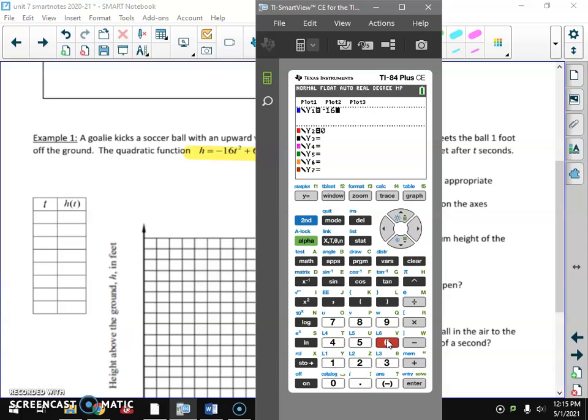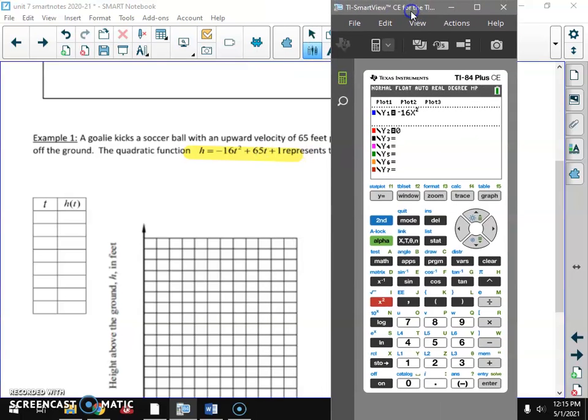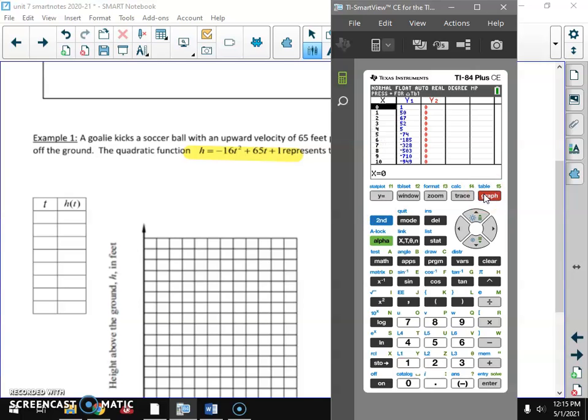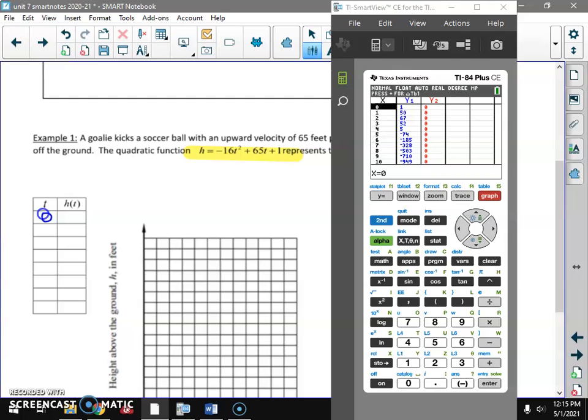Negative 16x squared. Negative, that means it's going to be sad and that makes sense because the ball should go up and then down. Plus 65x, don't forget your x, plus one. Now our table is going to be time. So when we go to second graph, we're not necessarily going to do sweet spot. At time zero, the ball was one foot off the ground.